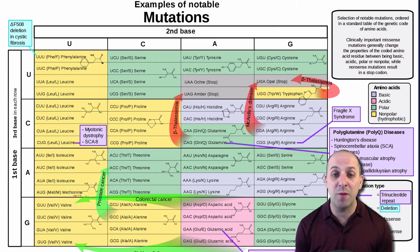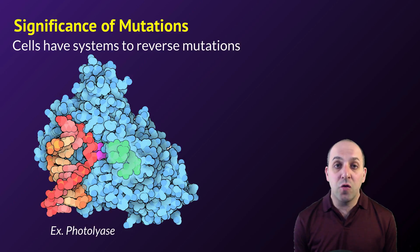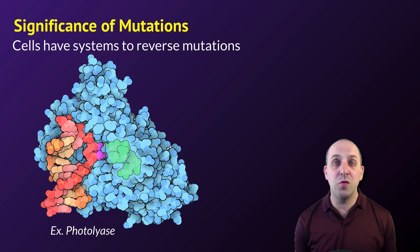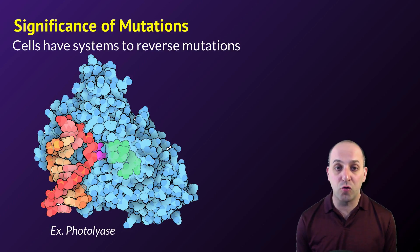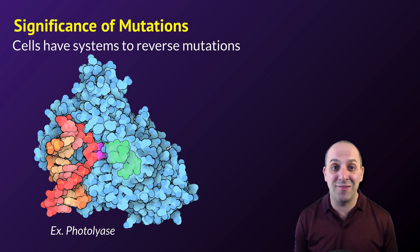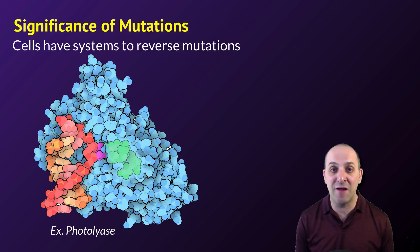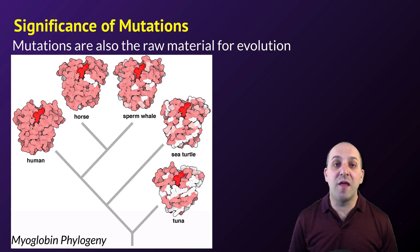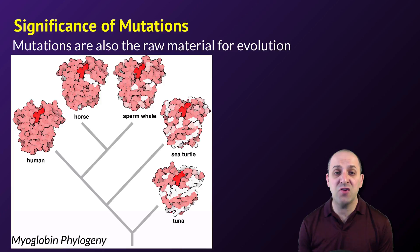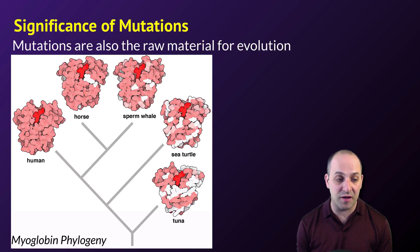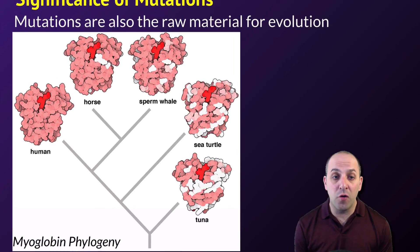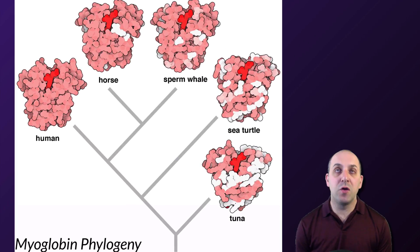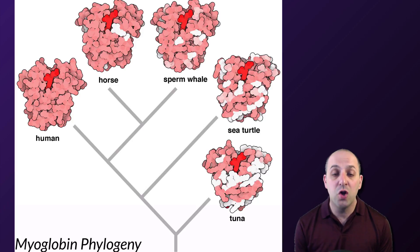Because mutations can have such detrimental effects, cells have systems that reverse mutations. This graphic shows the enzyme photolyase, which exists to undo the thymine dimers caused by exposure to ultraviolet radiation. Since you're exposed to UV radiation anytime you're outside in sunlight, it makes sense that cells have systems to reverse the effects of most of these mutations. This diagram shows the evolution of myoglobin — a protein only found in mammals — across different mammalian lineages, with the differences entirely a function of mutations that occurred in each lineage.